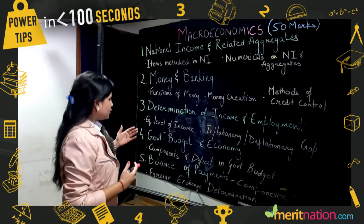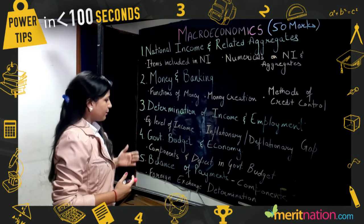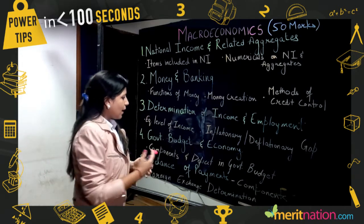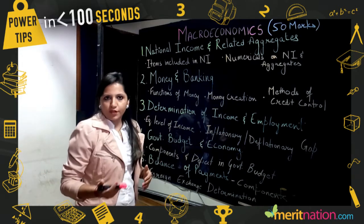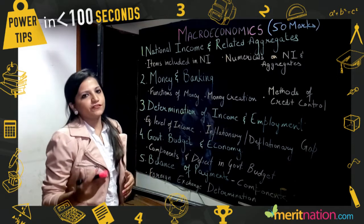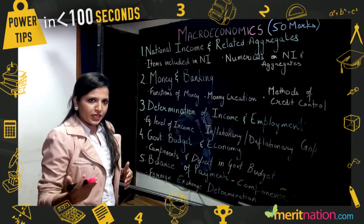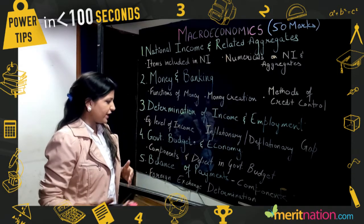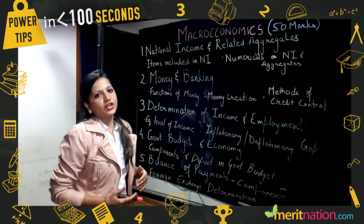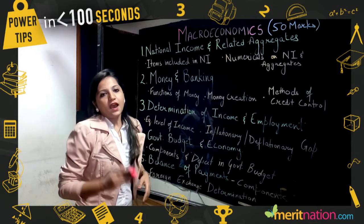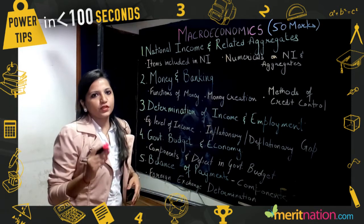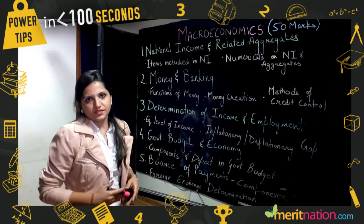Lastly, from Chapters 4 and 5, the topics that cannot be missed are components of government budget, deficits in government budget, determination of exchange rate, and components of the Balance of Payments (BOP).